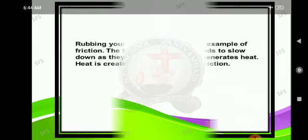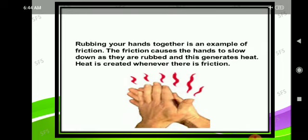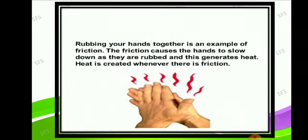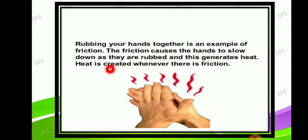We'll see about friction — its advantages as well as disadvantages. Rubbing your hands together is an example of friction. The friction causes the hands to slow down as they are rubbed, and this generates heat. Heat is created whenever there is friction.